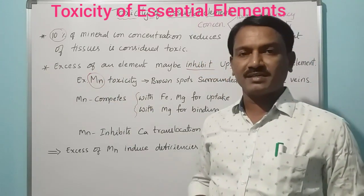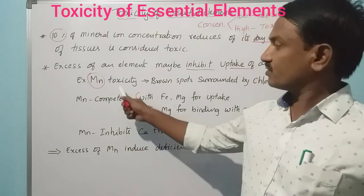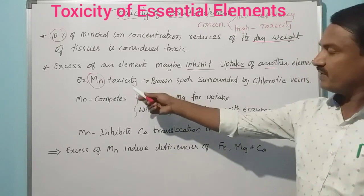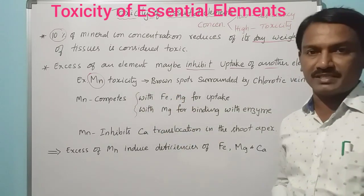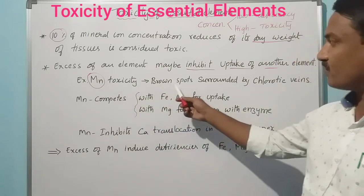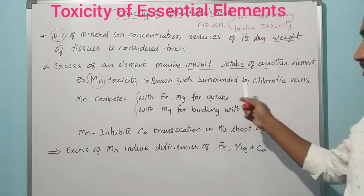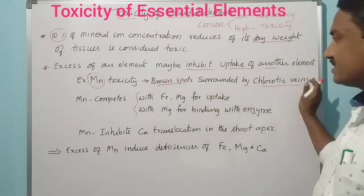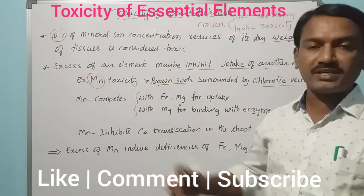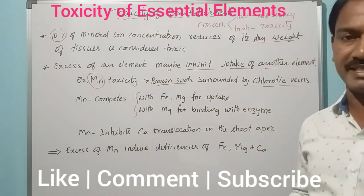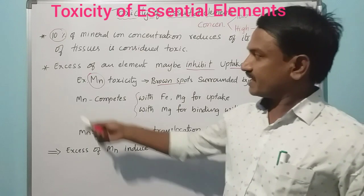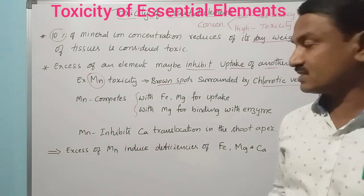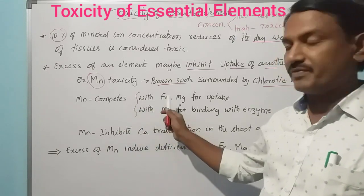When manganese is in excess in plants, it leads to toxicity. The characteristic symptom of manganese toxicity is brown spots surrounded by chlorotic veins. This symptom — brown spots surrounded by chlorotic veins — is the defining character of manganese toxicity in plants.